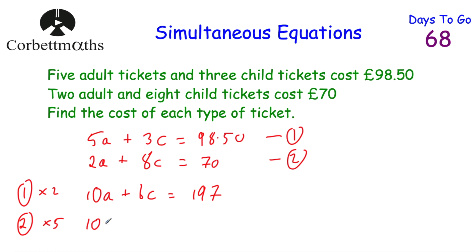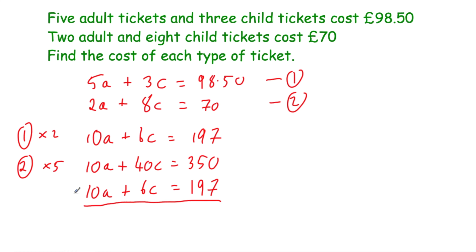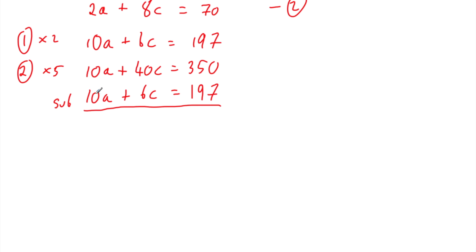Multiplying equation 1 by 2: 5A times 2 is 10A, plus 6C, equals £197. Then multiplying equation 2 by 5: 2A times 5 is 10A, 8C times 5 is 40C, and 70 times 5 is 350. I'm going to write the second equation beneath the first and subtract. 10A minus 10A is 0. 40C minus 6C is 34C. And 350 minus 197 equals 153. So we've got 34C equals 153.